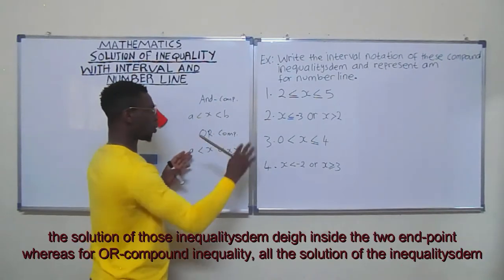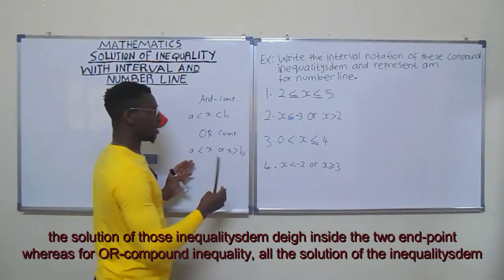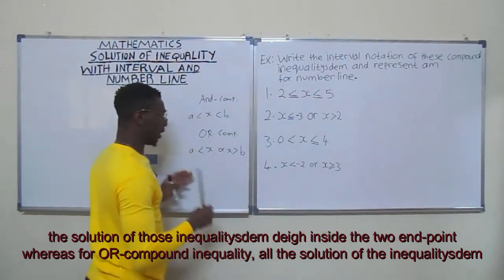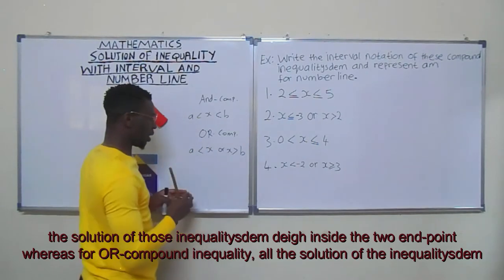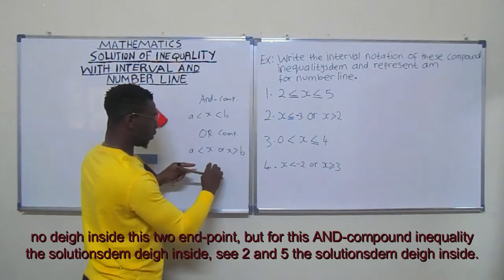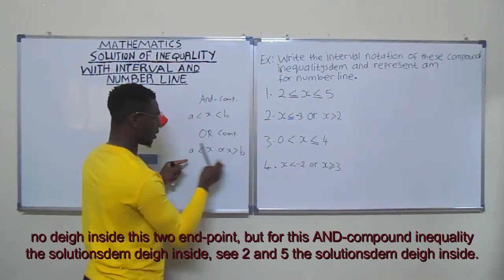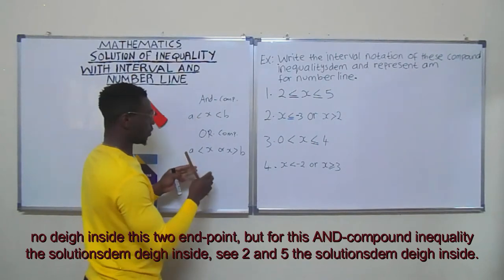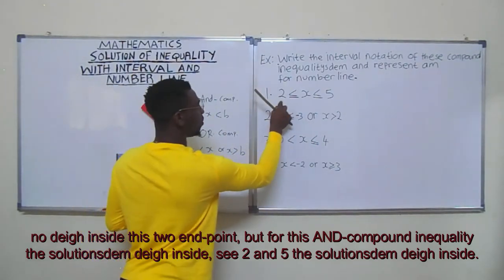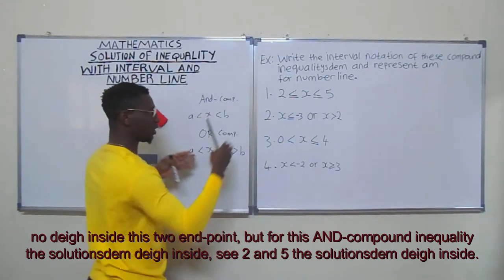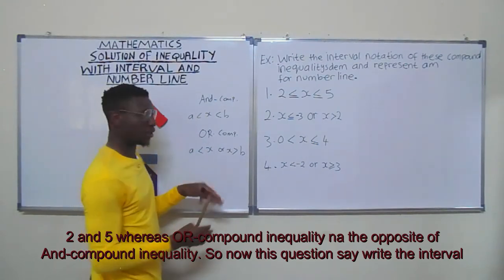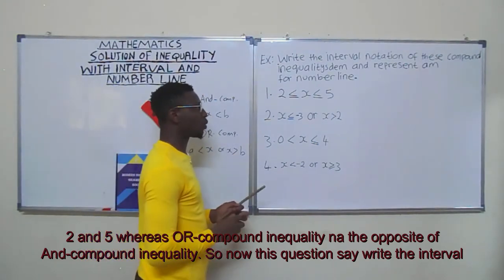For an AND compound inequality, the solution lies inside the two endpoints. For an OR compound inequality, the solution lies outside the two endpoints — it is the opposite of the AND compound inequality. For example, if the AND compound inequality has endpoints two and five, the solution is inside two and five.